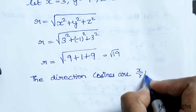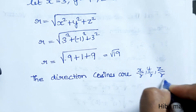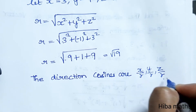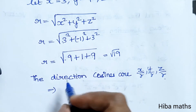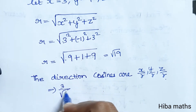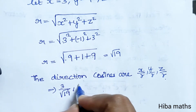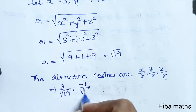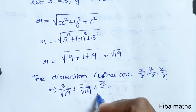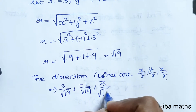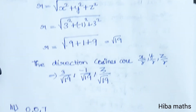The direction cosines are X by R, Y by R, Z by R. So the direct answers are: X value 3, giving 3 by root 19; Y value minus 1, giving minus 1 by root 19; Z value 3, giving 3 by root 19. These are our direction cosines.